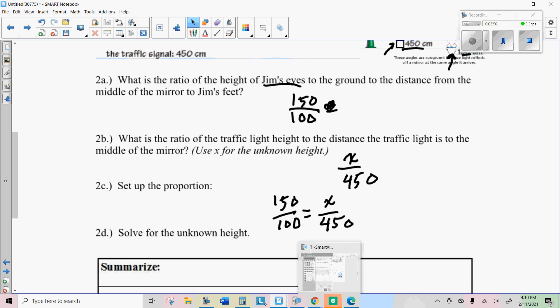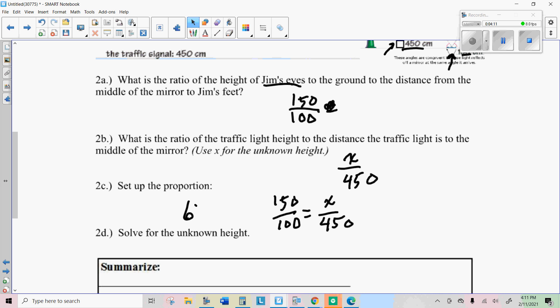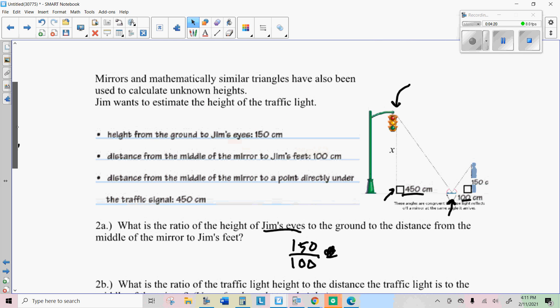So I'm going to take one fifty times four fifty, and get that answer and divide that by one hundred. And we get six hundred and seventy-five. This is centimeters. Six seventy-five centimeters. So those are the two types of problems you're going to be doing.